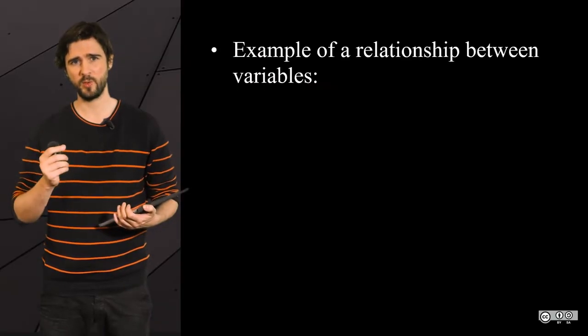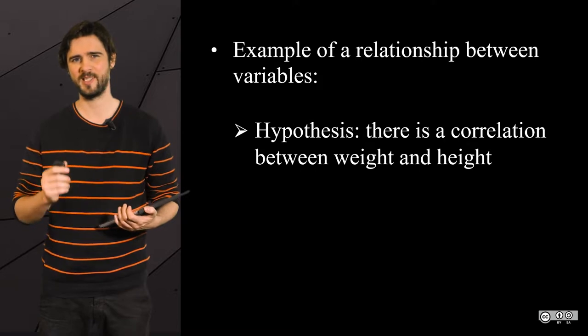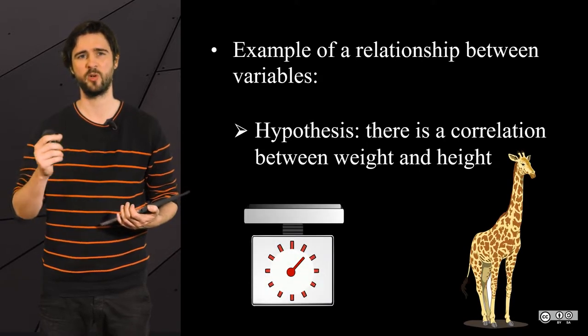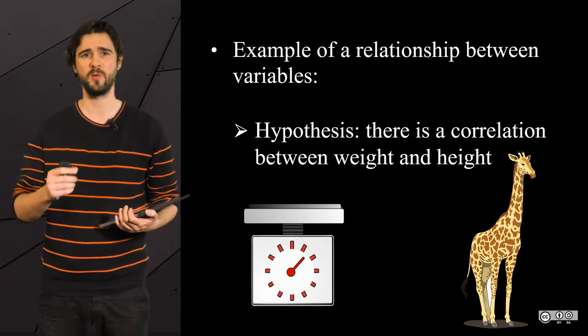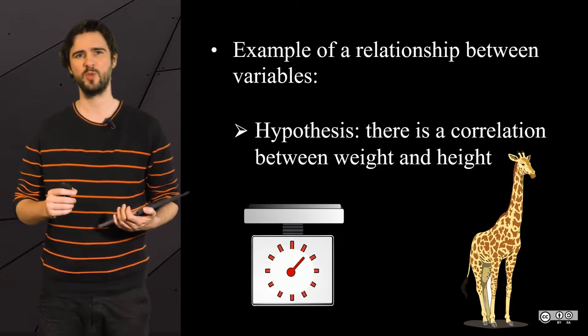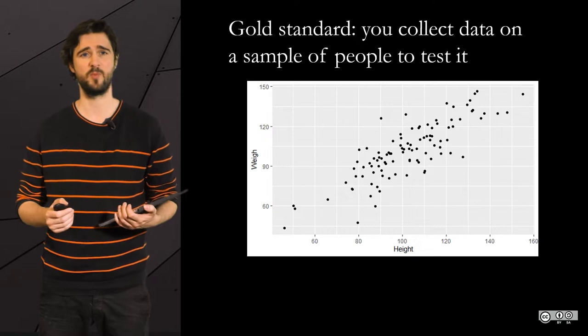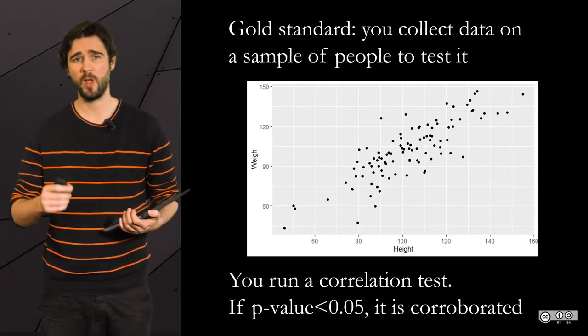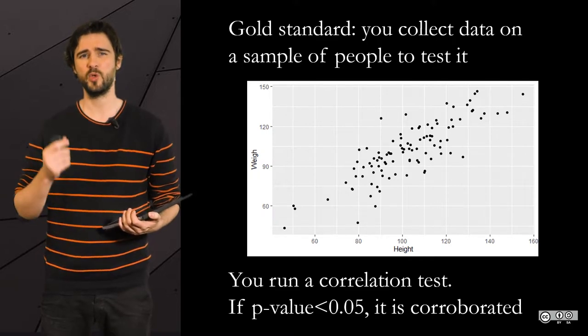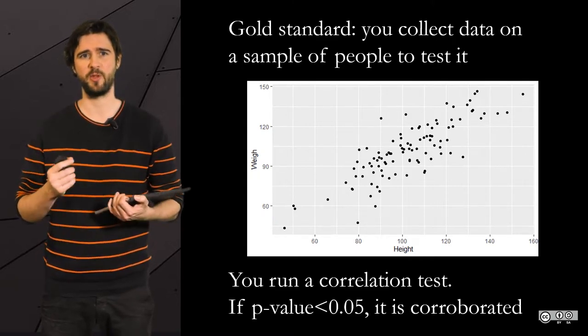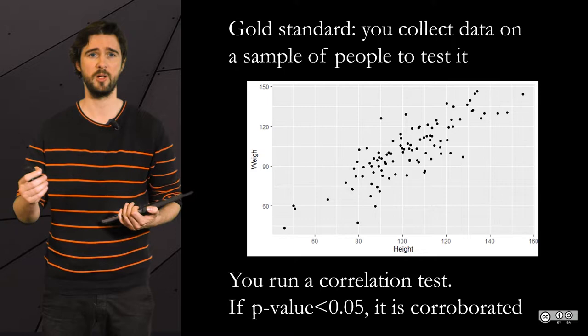For instance, if you want to know whether there is a statistically significant relationship among the general population between the variable height and the variable weight, well, you perform a correlation test, which is most likely to show a significant relationship between the two variables. But you have good reasons to believe that the taller someone is, the heavier he or she will be.